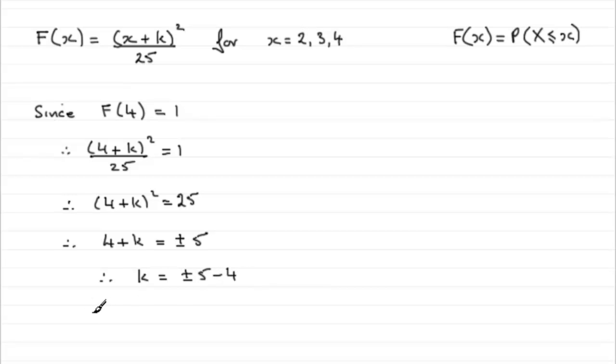So that's going to lead to k equaling, well if we take the plus 5, 5 minus 4 is going to be 1. Or if we take minus 5, minus 5 minus 4, k is going to be equal to minus 9.